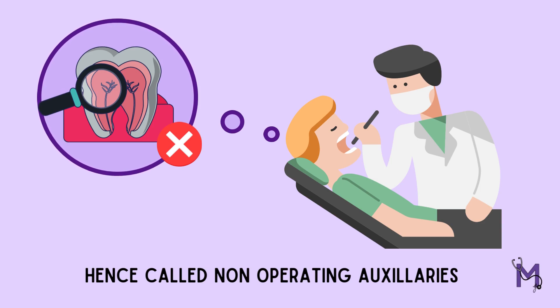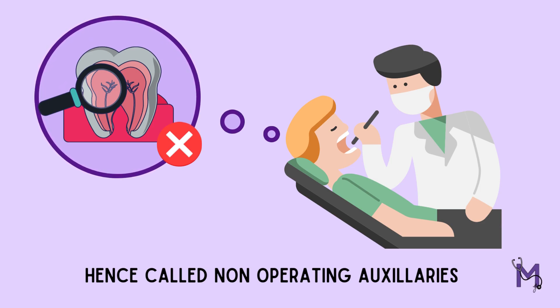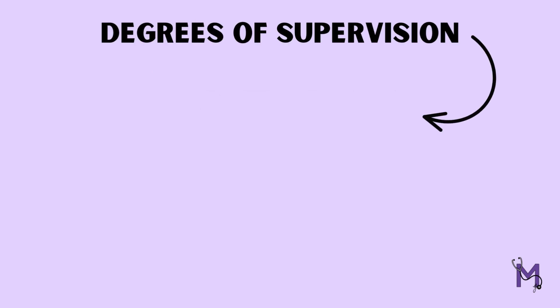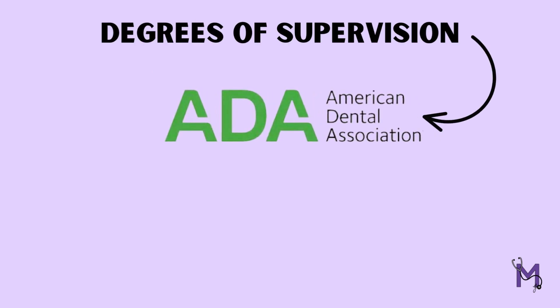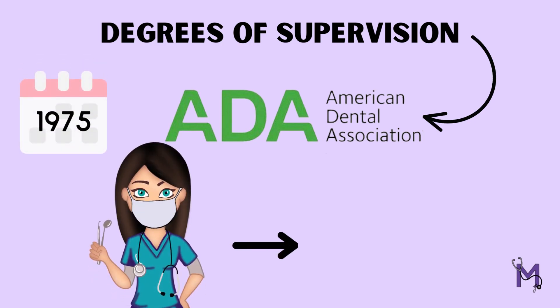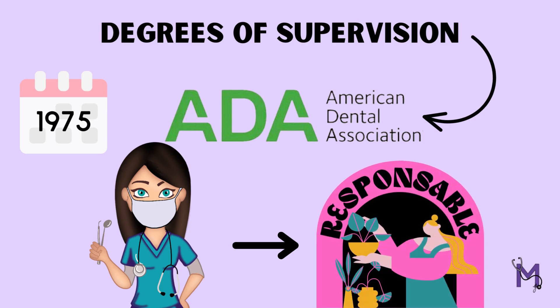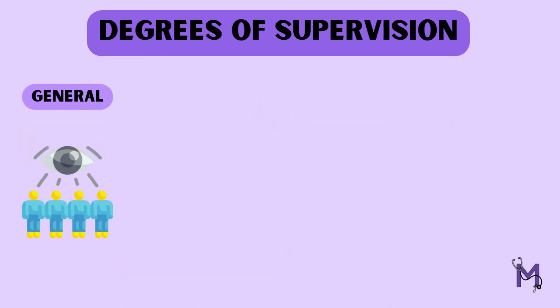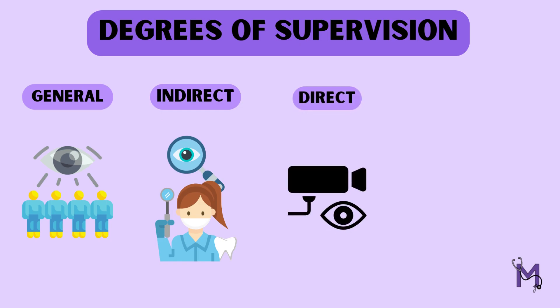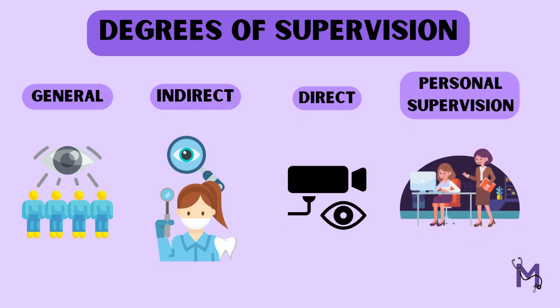We will study each of these auxiliaries in detail in the upcoming videos. Let's now look at the four degrees of supervision of auxiliaries defined by the American Dental Association in the year 1975, assuming that the licensed dentist held the ultimate responsibility. The four degrees of supervision are general, indirect, direct, and personal supervision.